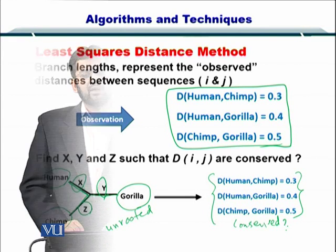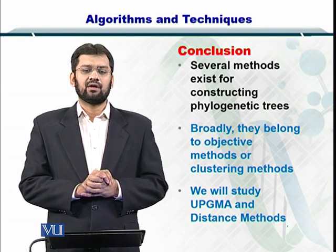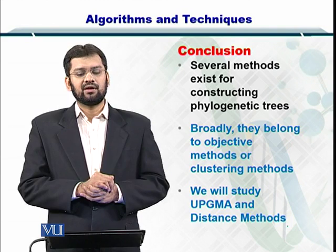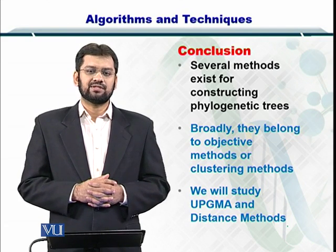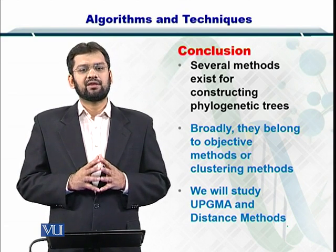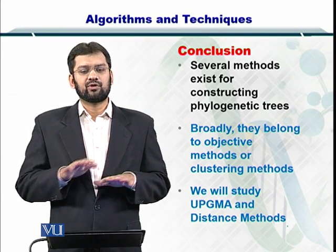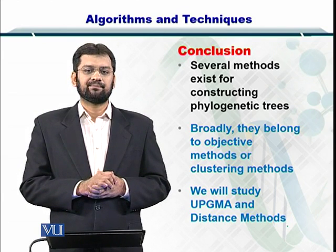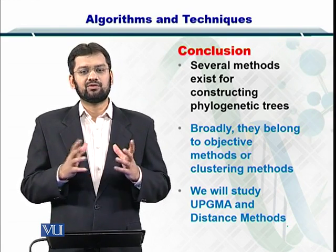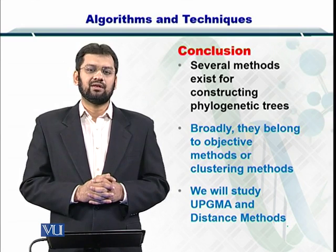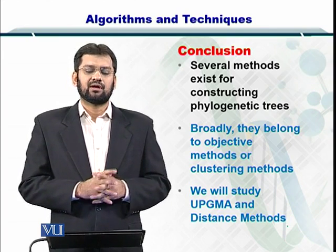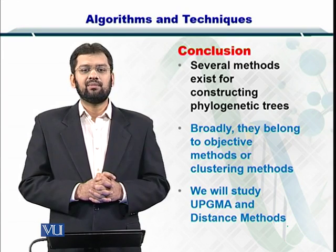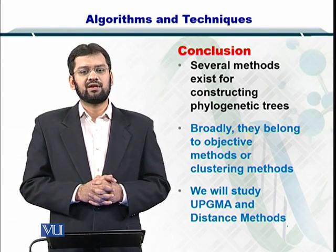In conclusion, several methods exist for constructing phylogenetic trees. We will look at these methods in detail later, but this was just to introduce you to the type of information we employ in constructing them. You must remember that the foundation stone for constructing the phylogeny is the pairwise sequence alignment — if you can perform pairwise sequence alignment, you can arrive at the distance between two sequences, and this distance can be used in constructing phylogenetic trees. The two categories, clustering and objective methods, are available, along with several other algorithms you can study and employ depending on your requirement.